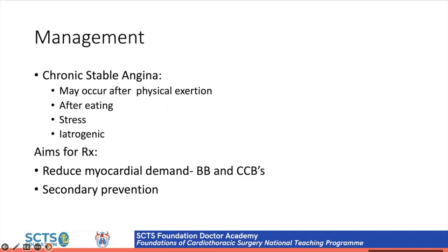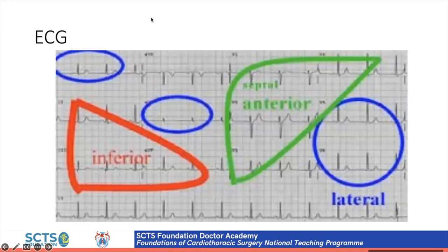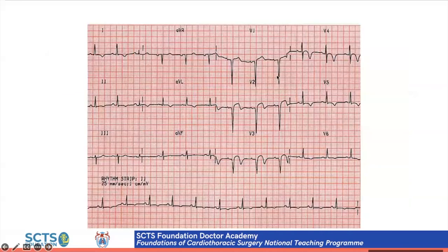Beta-blockers reduce myocardial demand; if contraindicated due to asthma or peripheral vascular disease, calcium channel blockers are an alternative. Secondary prevention with statins is important — baseline cholesterol and triglyceride levels should be checked. ECGs are vital, identifying which territory shows ischaemia — inferior, anterior, or lateral — and must be obtained immediately.